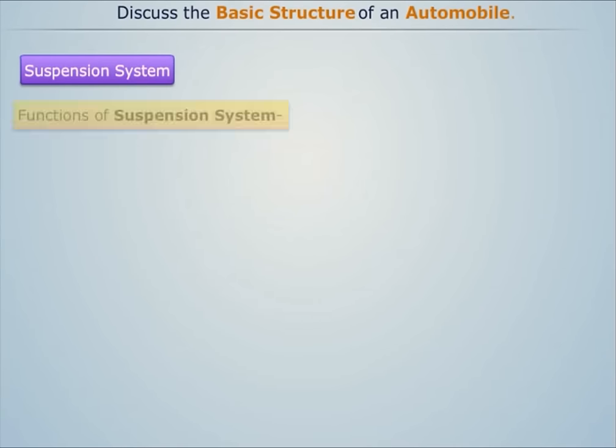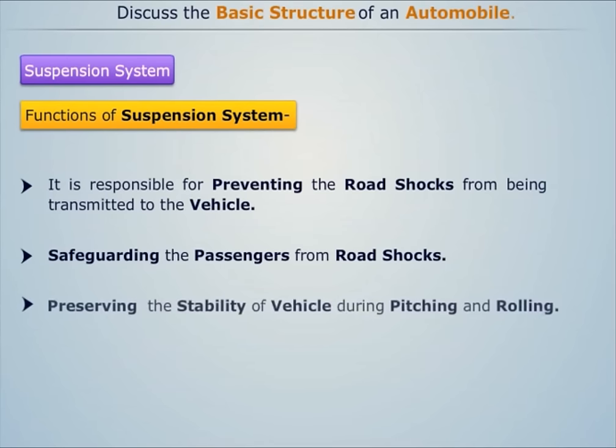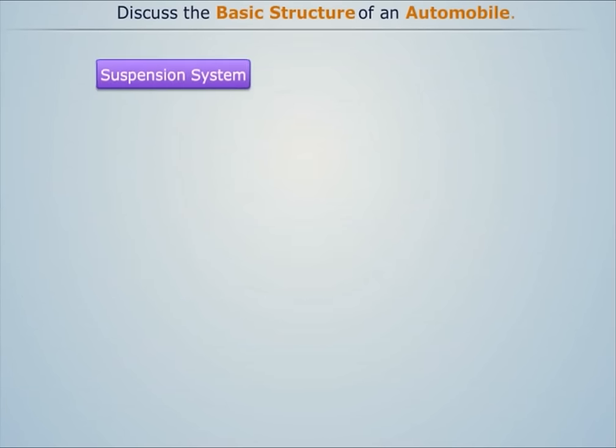The suspension system is responsible for preventing road shocks from being transmitted to the vehicle, safeguarding passengers from road shocks, and preserving vehicle stability during pitching and rolling. There are two types of suspension systems: conventional system and independent system.